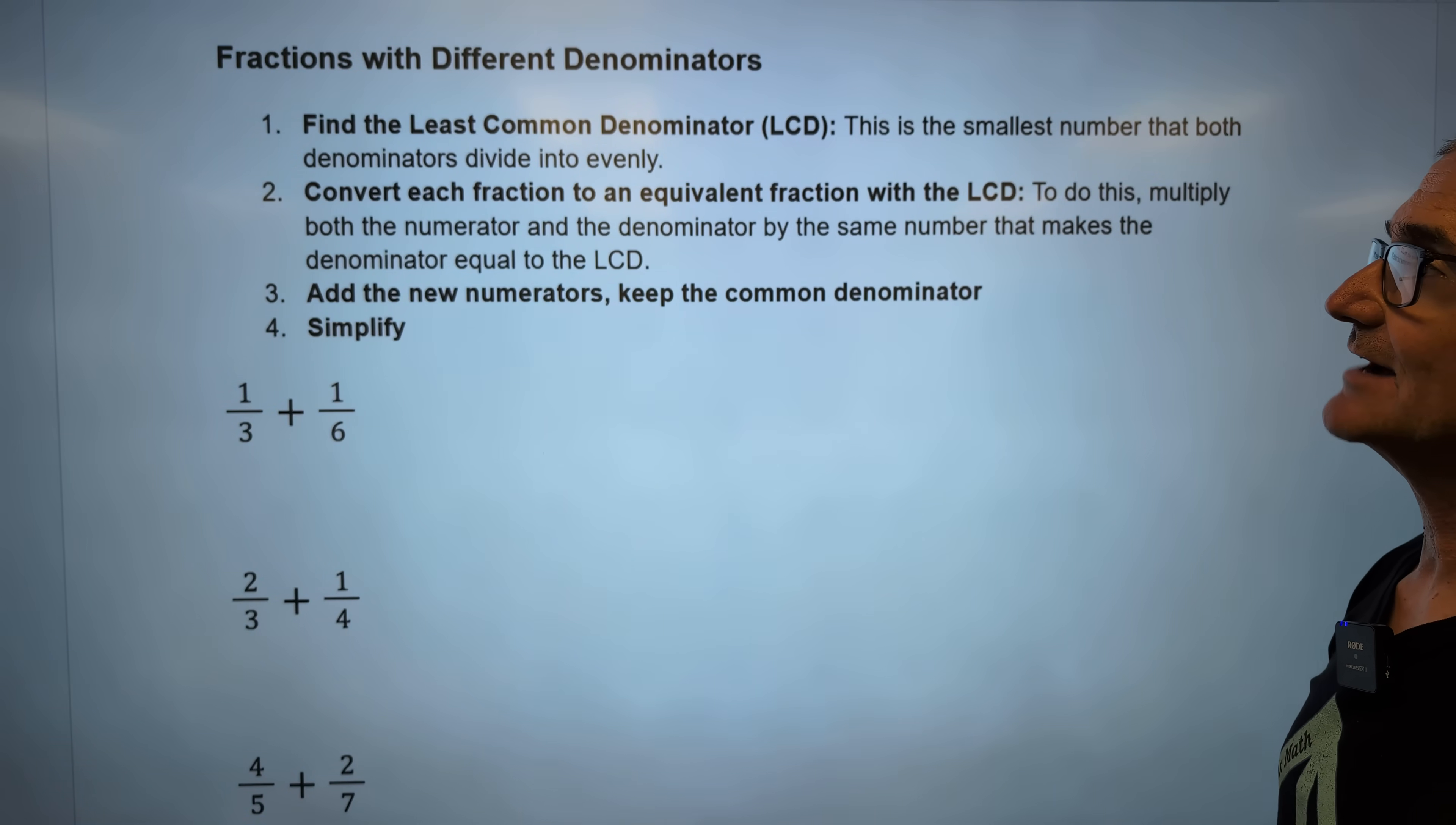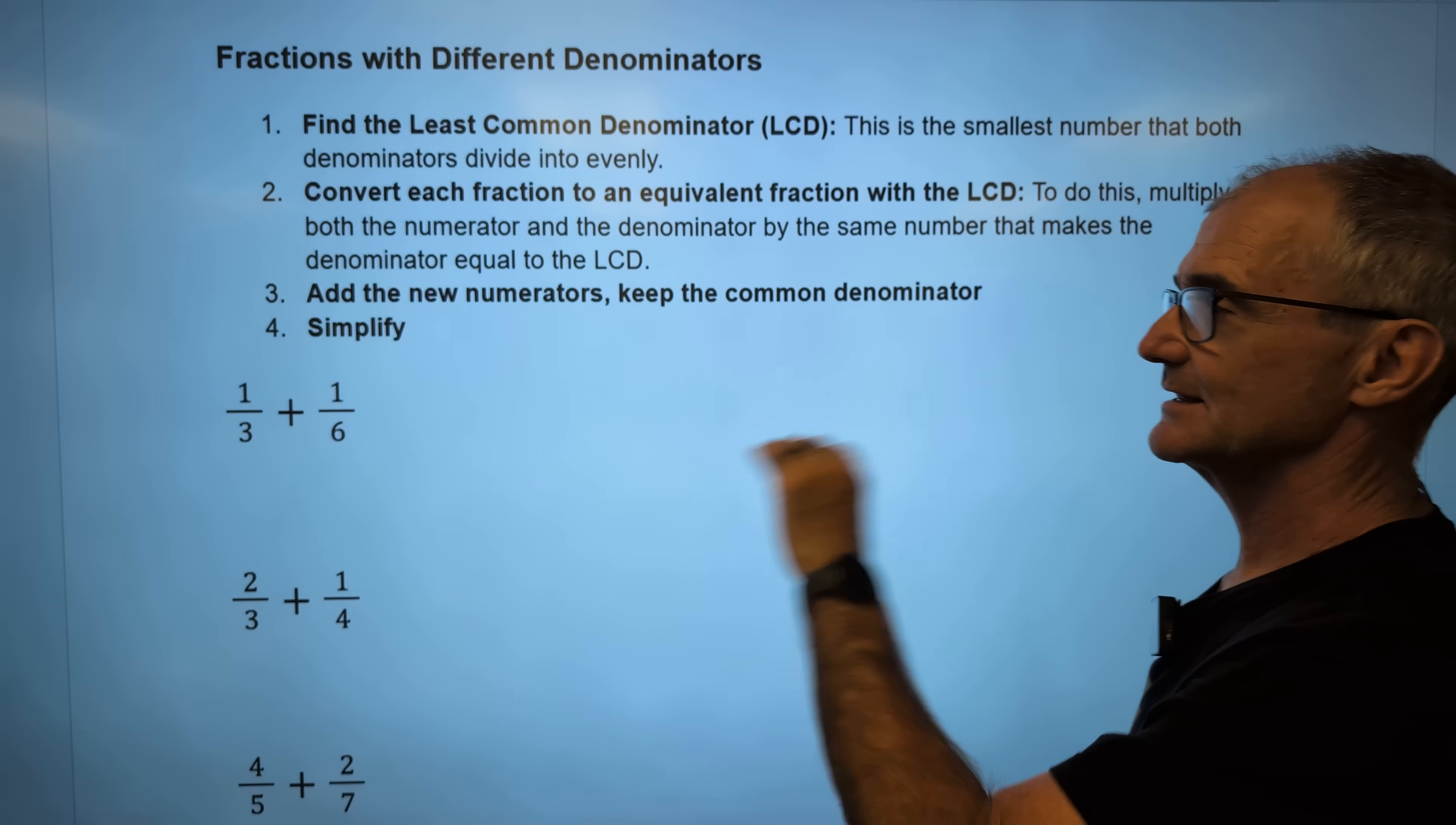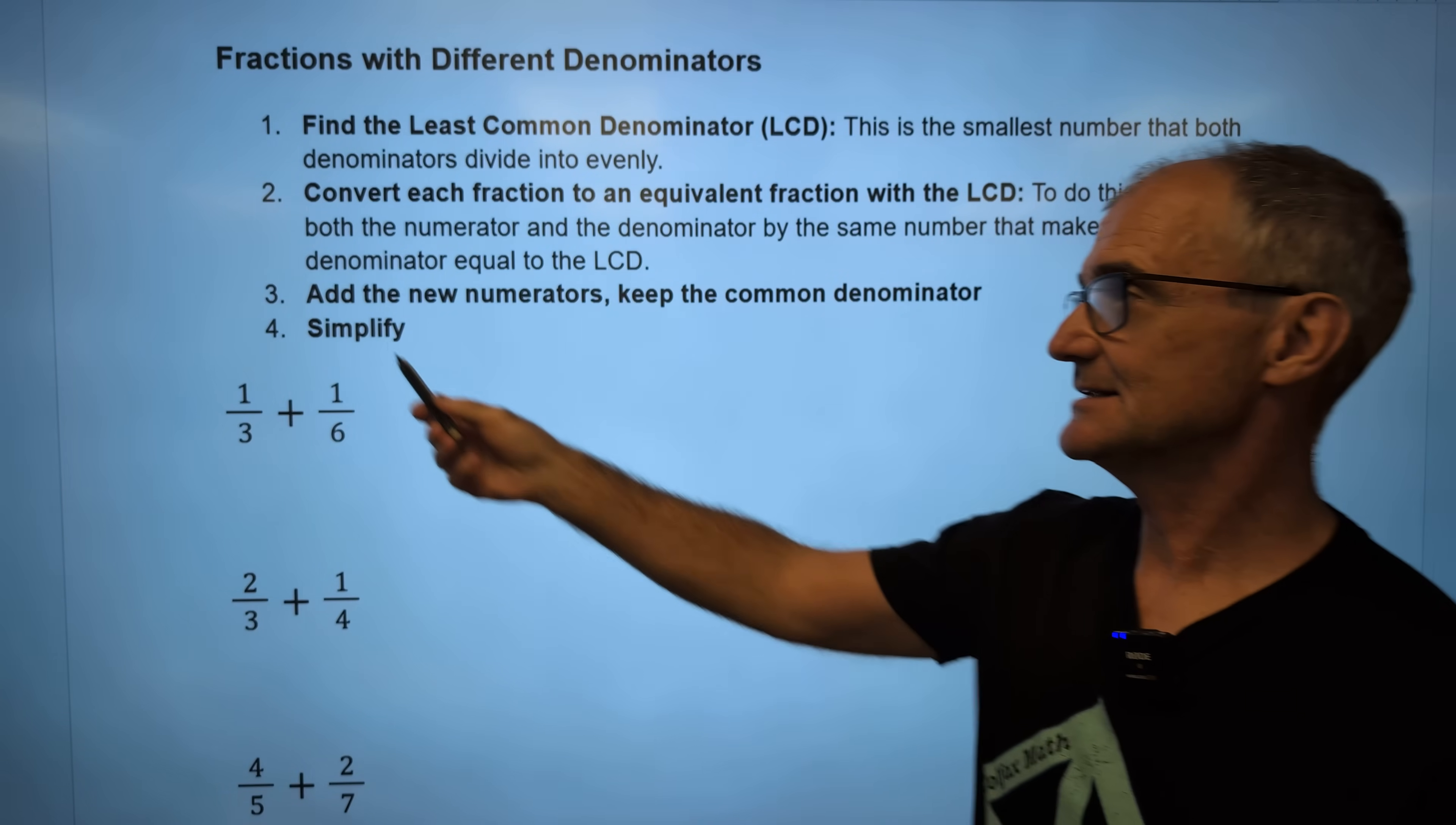Once you have that, you want to convert each fraction to the equivalent fraction with that least common denominator. And then once you have that common denominator, add across the top, keep the bottom the same. So add the numerators, the top numbers, keep the bottom number, and then simplify.